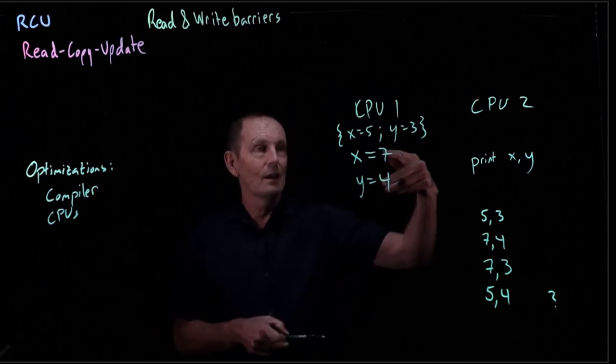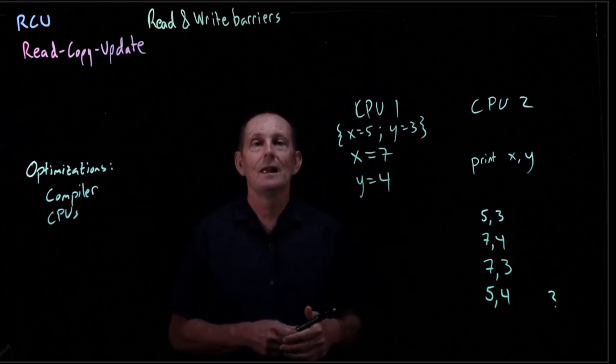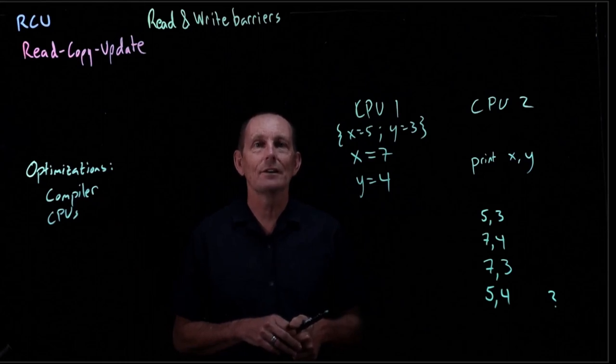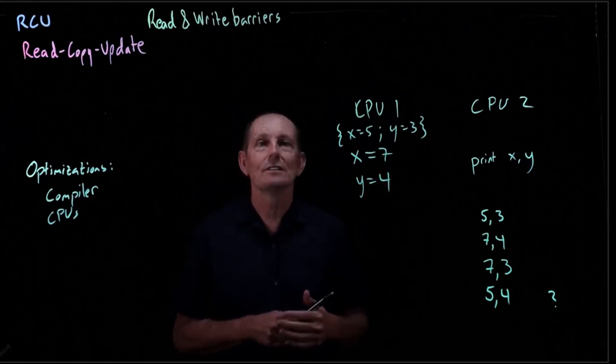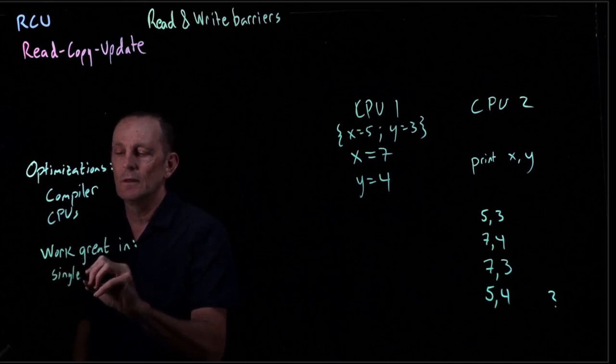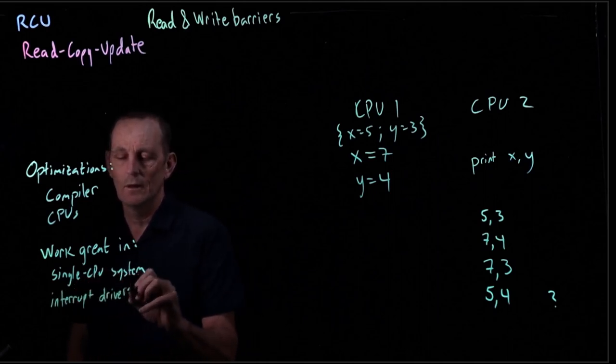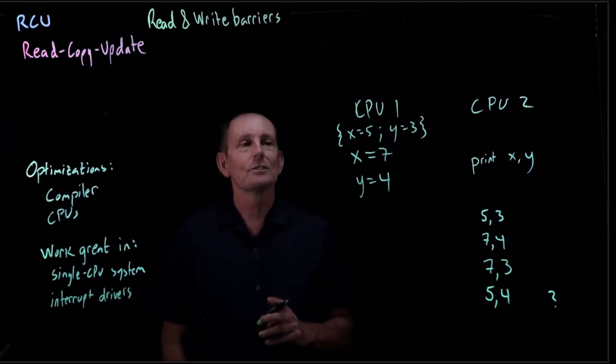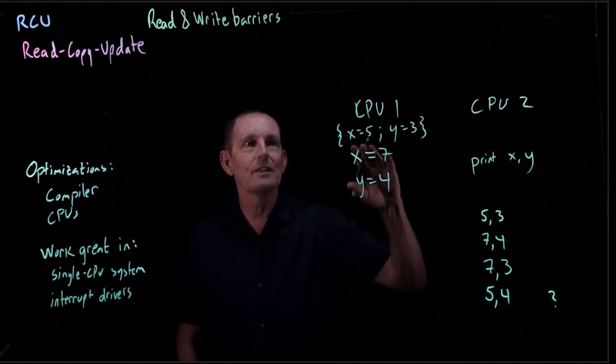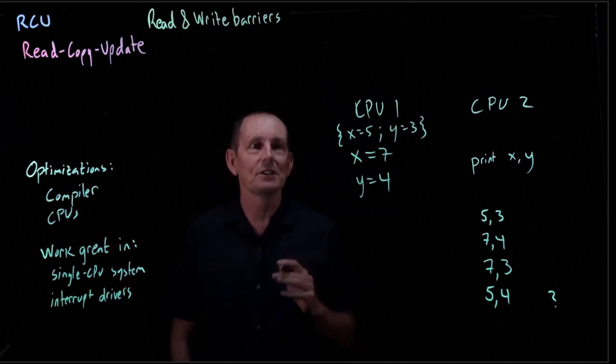But the compiler, this could work on any architecture. So in C, for example, the compiler is free to reorder the order of stores that happen. As long as, in both these cases, the optimizations basically say we're not going to change the behavior as long as no one else is changing these values. So the optimizations work great in a single CPU system where we ignore or aren't concerned about interrupt drivers.